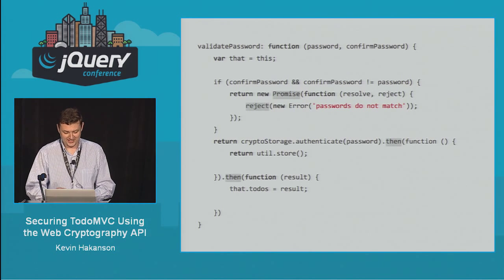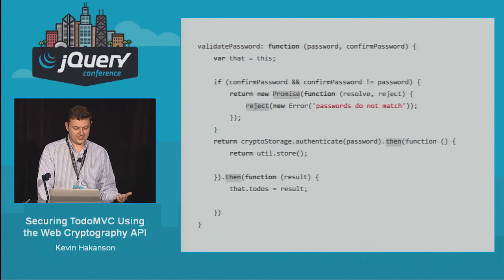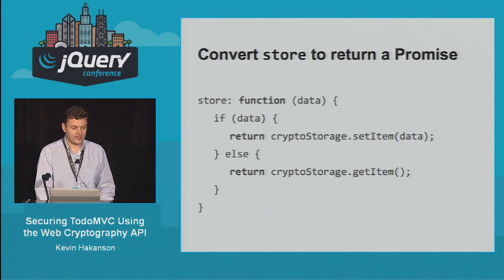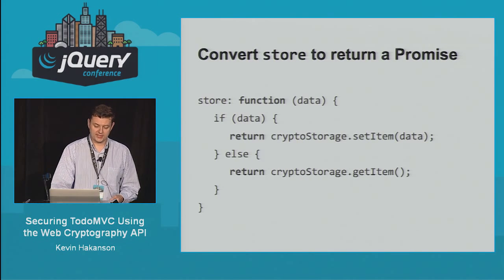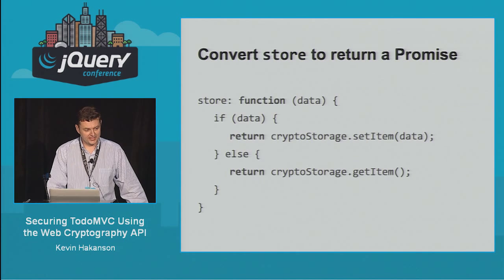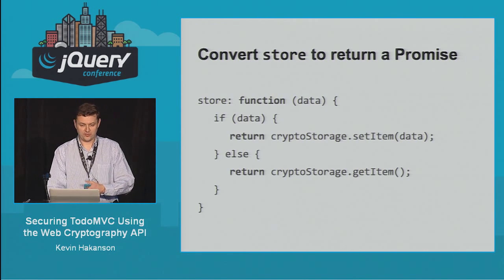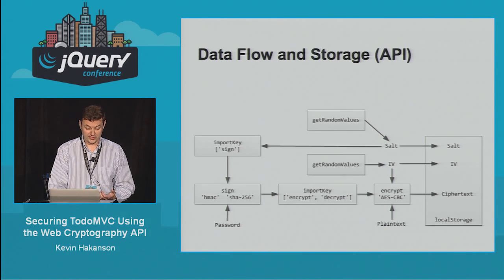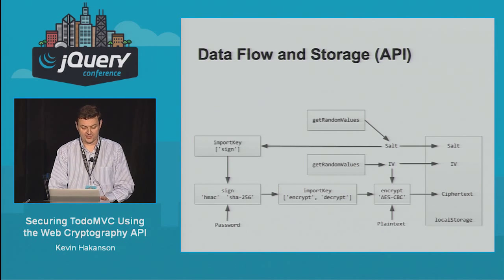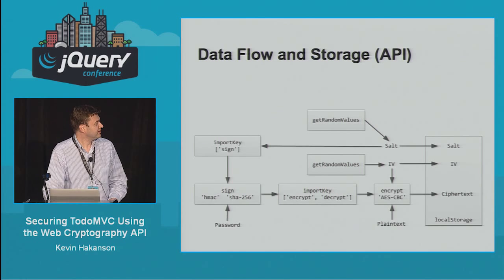The store function in Todo MVC just did a localStorage.setItem / localStorage.getItem which returns synchronously, so I had to convert that to a promise. The underlying crypto storage code returns a promise, so there's a nice spot where promises take care of themselves — if you return a promise from a .then(), it just works in the chain. The diagram annotated with API calls: getRandomValues, importKey for sign, sign, importKey for encrypt, encrypt, decrypt — then store the results.